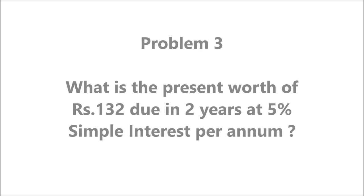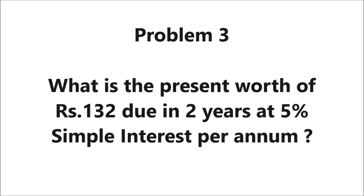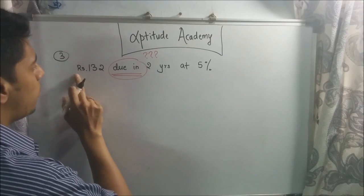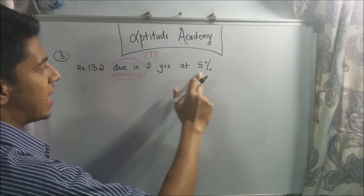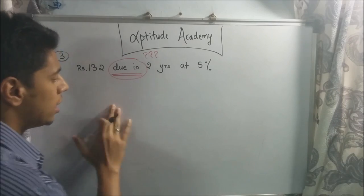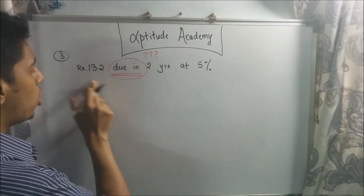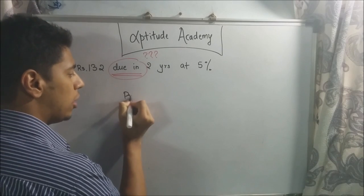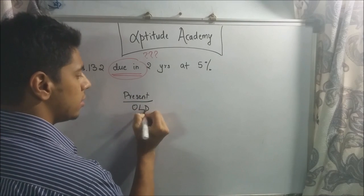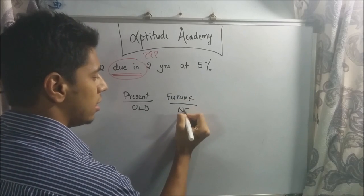Problem 3: What is the present worth of rupees 132 due in 2 years at 5% simple interest per annum? All right. Now, problem 3. They've said, what is the present worth of 132 rupees due in 2 years at 5%. Now, this is the part where most students go wrong. What does due in mean? Due in means in the future. So what is the present worth? Anyway, present will always be your old money. And your future will always be the new money that you get.